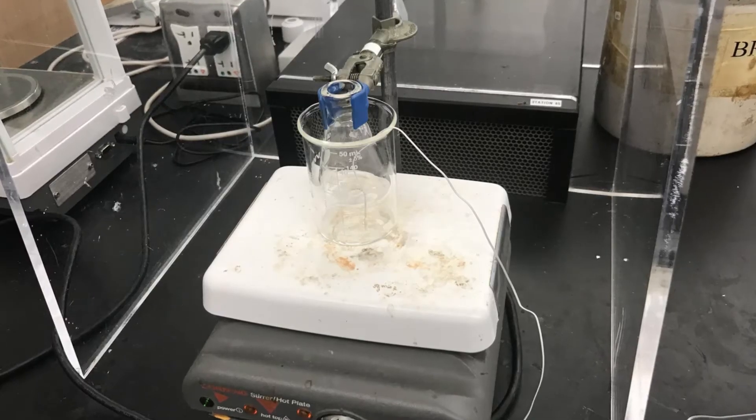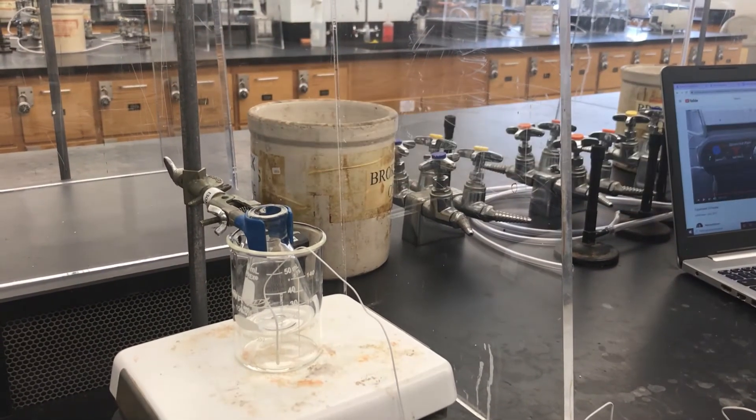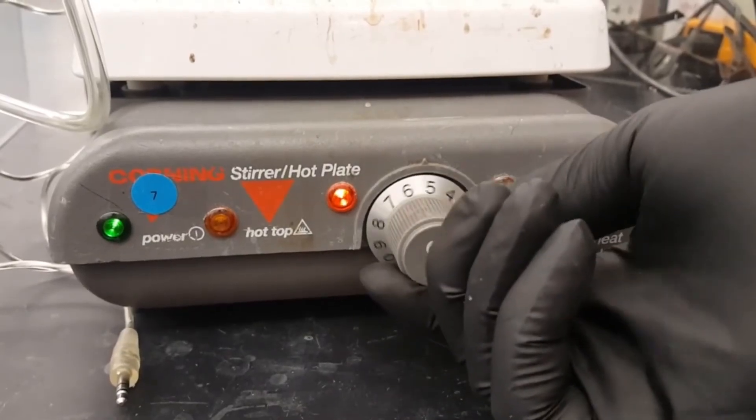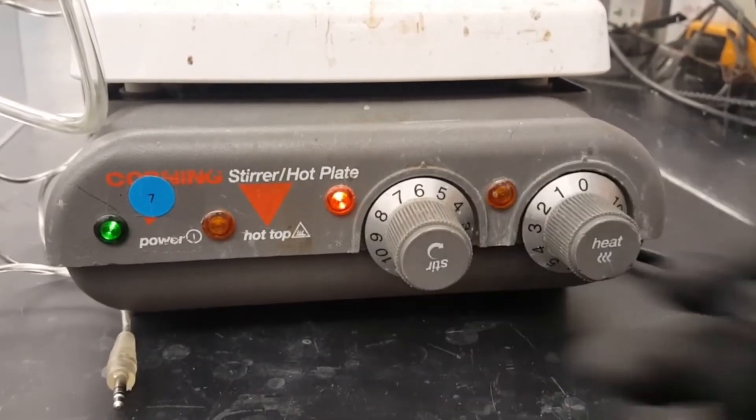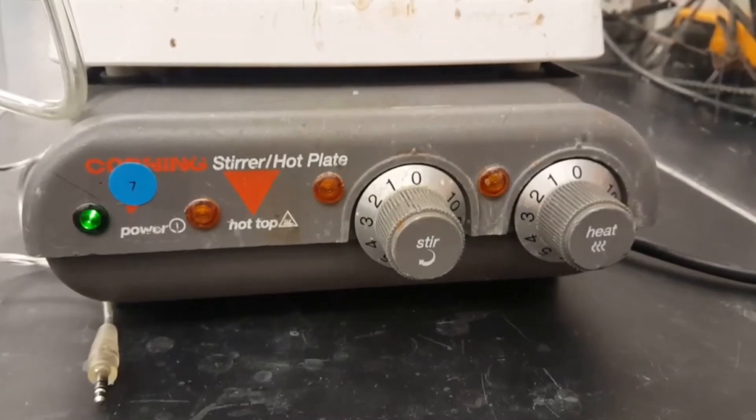Once you've got your Erlenmeyer flask suspended in your beaker you'll want to add your stir bar and turn on the stir function on your stir plate. Again be careful that you're using the stir function and not the heat function. Make sure that it's stirring properly. Now you are ready to open the spark view software on your computer.